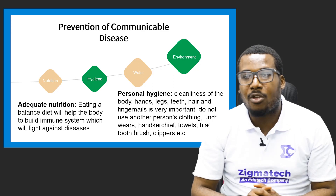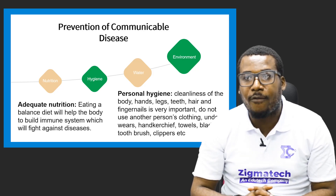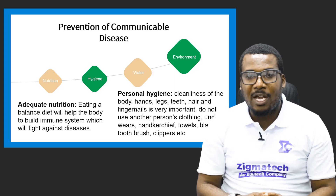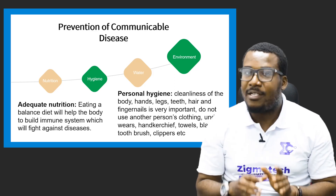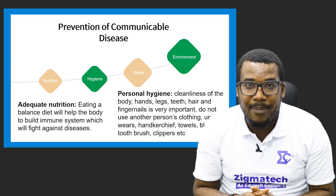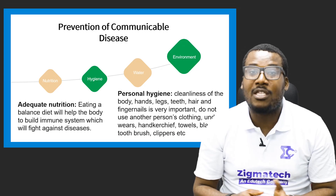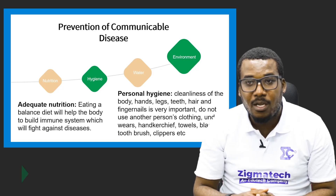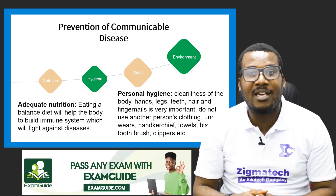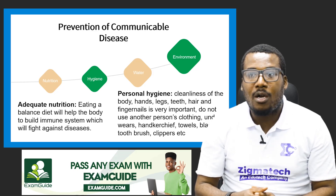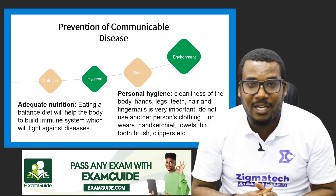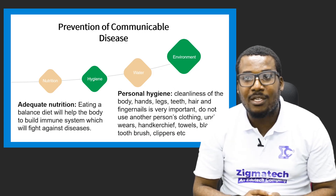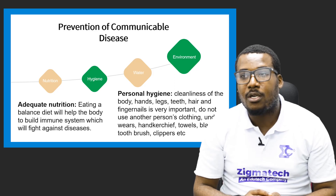Now let's enter the last part: prevention of communicable diseases. There are no easy ways to prevent them — how can you prevent something that is airborne when you can't see the air or dust particles? But there are eight ways to mitigate or minimize the effects. The first four are nutrition, hygiene, water, and environment.